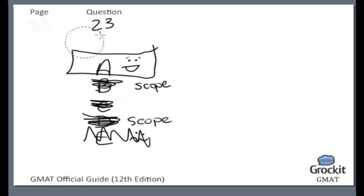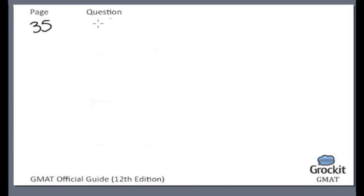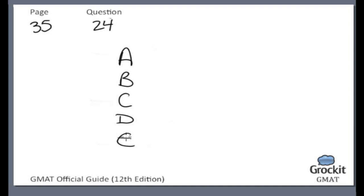Still page 35. Number 24. The percentage of households with an annual income of more than $40,000 is higher in Merton County than in any other county. However, the percentage of households with an annual income of $60,000 or more is higher in Summer County. If the statements above are true, which of the following must also be true? We need to find something that must be true if we take the above as true — basically we're making an inference.